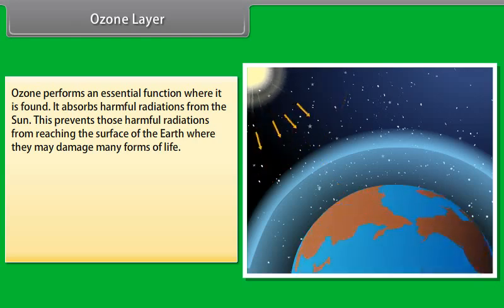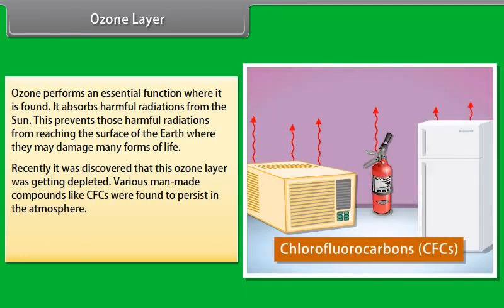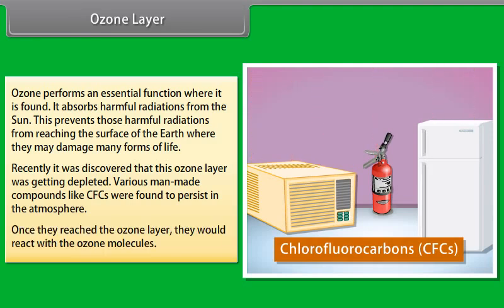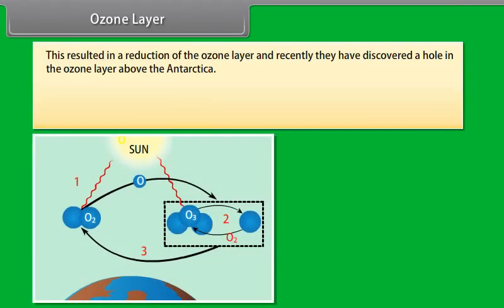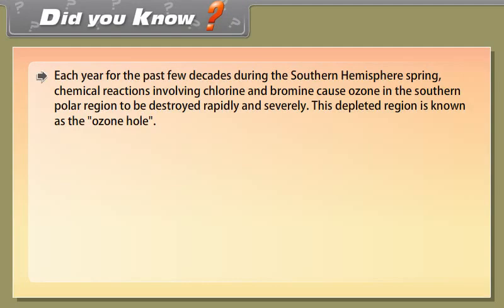Ozone layer. Oxygen is normally found in the form of a diatomic molecule. However, in the upper reaches of the atmosphere, a molecule containing three atoms of oxygen is found. This is called ozone and its formula is O3. Unlike the normal diatomic molecule of oxygen, ozone is poisonous and we are lucky that it is not stable nearer to the earth's surface. Ozone performs an essential function where it is found. It absorbs harmful radiations from the sun. This prevents those harmful radiations from reaching the surface of the earth where they may damage many forms of life.